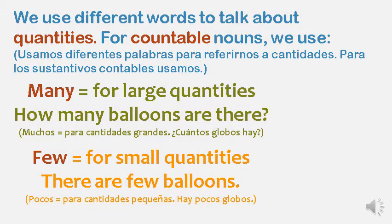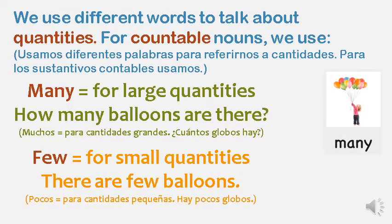We use different words to talk about quantities. For countable nouns, we use many for large quantities. How many balloons are there? Few for small quantities — there are few balloons.